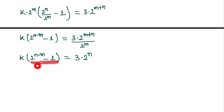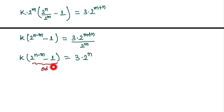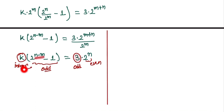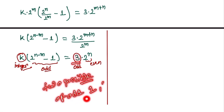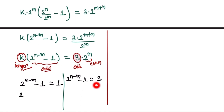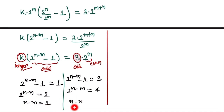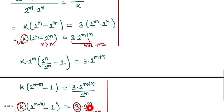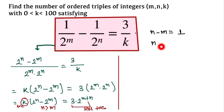Now we focus on the parity. The term (2^(n-m) minus 1) is always odd. The right side 3 times 2^m is also odd only when m equals 0, and k is an integer. So the two possible odd values for (2^(n-m) minus 1) are 1 and 3, giving n minus m equals 1 and n minus m equals 2 as our two cases.